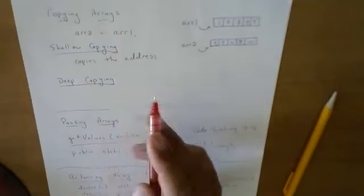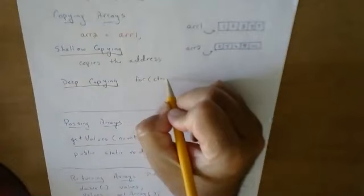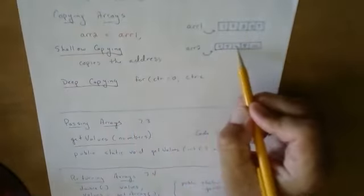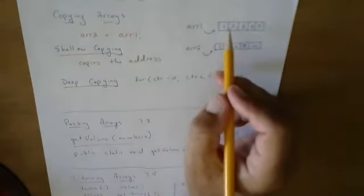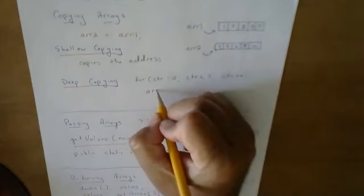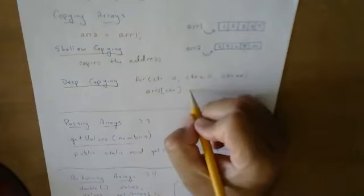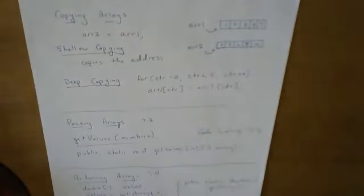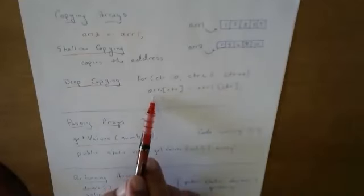So I'm going to have to do something along the lines of for counter equals zero. Counter is less than zero, one, two, three, four. There's five items in there. Five items. Counter plus plus. And then inside of here, if I want to copy what's in array one to array two, I'm going to say array two subcounter gets the value of array one subcounter. So this time I needed a loop to copy every value from array one into every value from array two.